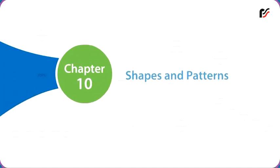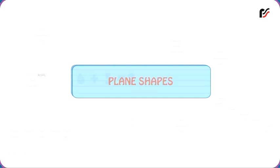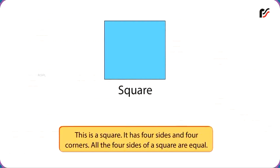Chapter 10 Shapes and Patterns. Plane Shapes. Square. This is a square. It has four sides and four corners. All the four sides of a square are equal.